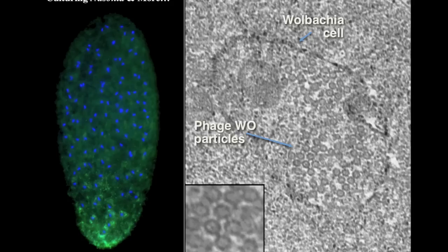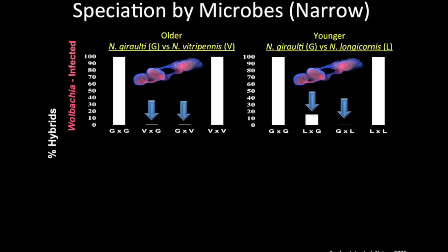Inside Nasonia are Wolbachia bacterial symbionts — vertically transmitted symbionts. Here's an egg of Nasonia labeled in blue for DNA, showing the dividing chromatin, and then the Wolbachia symbionts deposited from the mother's ovaries right into the developing oocytes. This egg is now populated with Wolbachia symbionts. This is an electron microscope picture of Wolbachia, about one micron in size. There are also tiny bacteriophage particles populating the Wolbachia cell. I won't talk about the phage stuff, but I will talk about Wolbachia, because this is very relevant to the narrow-sense model of microbes assisting speciation.